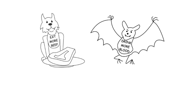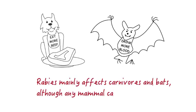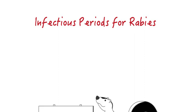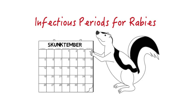Accordingly, rabies maintained by dog-to-dog transmission is termed canine rabies, and rabies in a dog originating from another mammal, such as a skunk, would be referred to as skunk rabies in a dog. Usually, saliva is infectious at the time clinical signs occur, but domestic dogs, cats, and ferrets may shed virus for several days before onset of clinical signs.